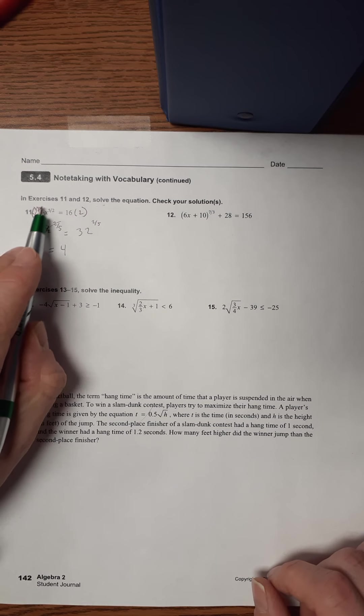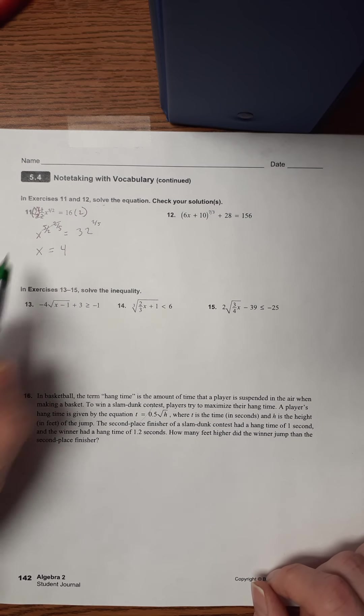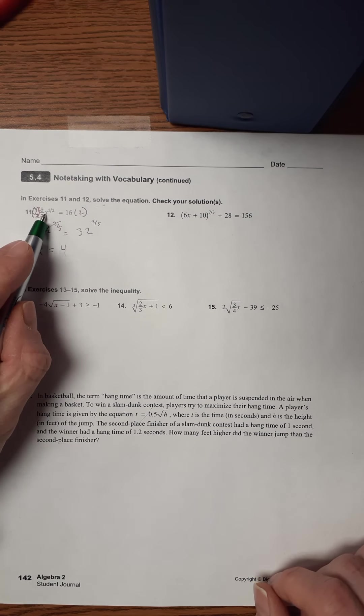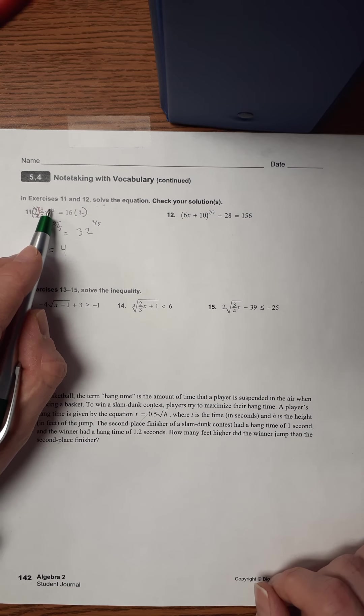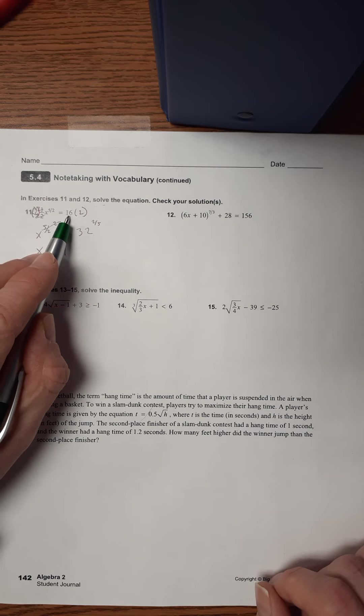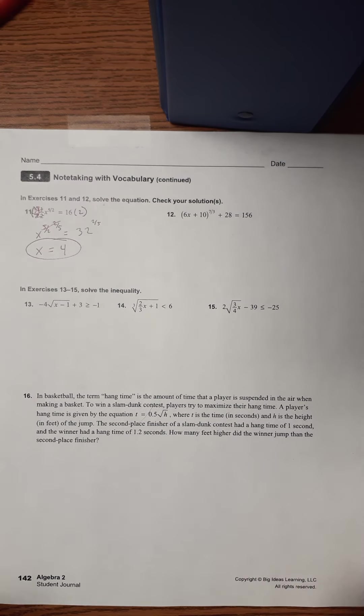We just have to plug that in and make sure it works. So let's put a 4 in here for X. So if this was a 4, the square root of 4 is 2, 2 to the fifth power is 32, half of 32 is 16. So that checks out. Very good.